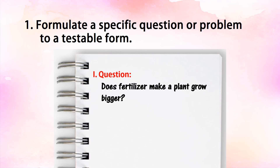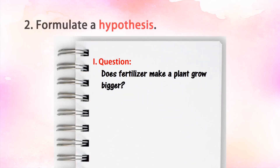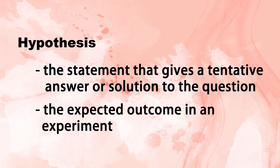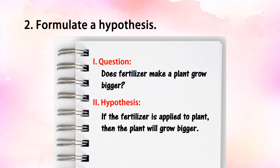The number two component is to formulate a hypothesis. A hypothesis is a statement that gives a tentative answer or solution to the question. It is the expected outcome in an experiment. For example, if the fertilizer is applied to a plant, then the plant will grow bigger. You can use the if-then statement for your hypothesis.